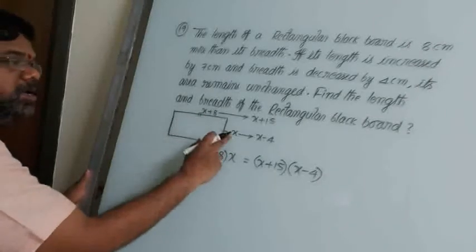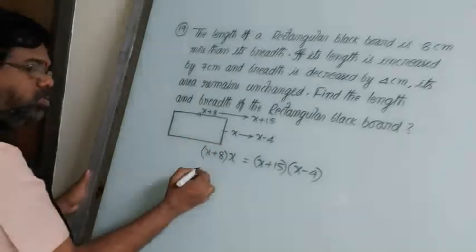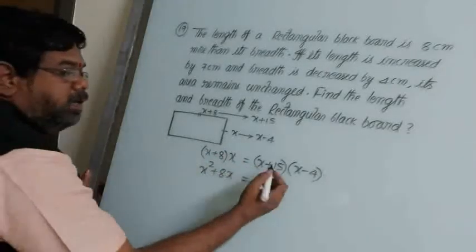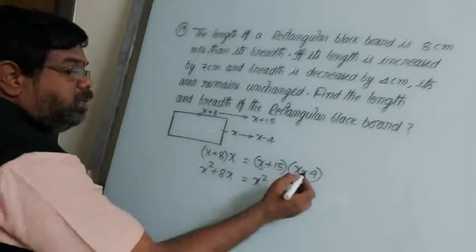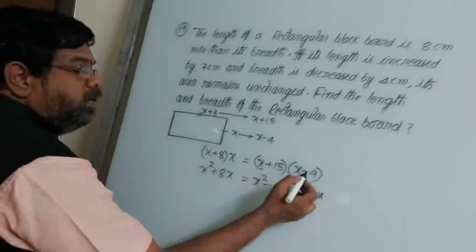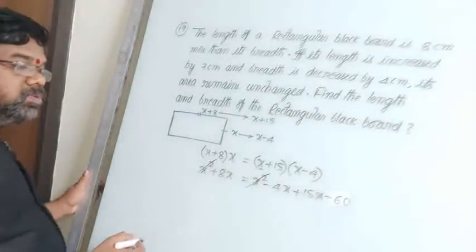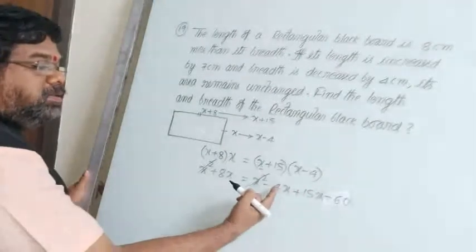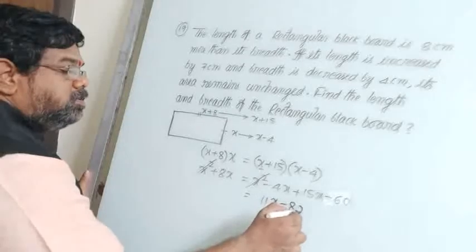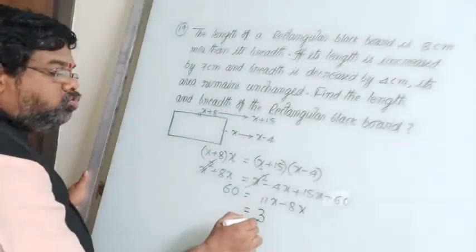Setting the areas equal: (x + 8) × x = (x + 15) × (x − 4). Expanding: x² + 8x = x² − 4x + 15x − 60 = x² + 11x − 60. Cancelling x² from both sides: 8x = 11x − 60. Rearranging: 3x = 60.